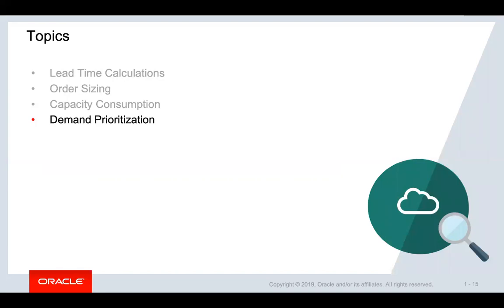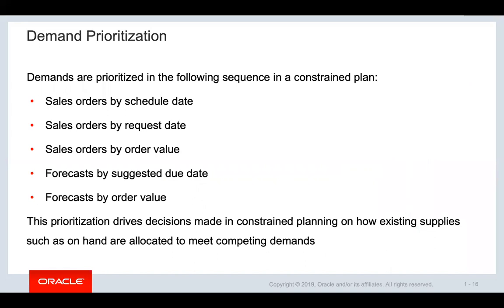This section will discuss demand prioritization in constraint supply planning. Demands are prioritized in the following sequence: first, the plan looks at sales orders by schedule date. If multiple sales orders exist on the same schedule date, it prioritizes based on request date. If multiple sales orders have the same schedule date and request date, the plan prioritizes based on order value. Order value is calculated as order quantity multiplied by item price.